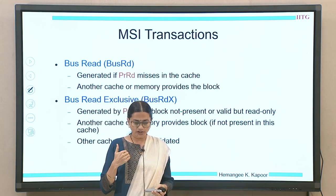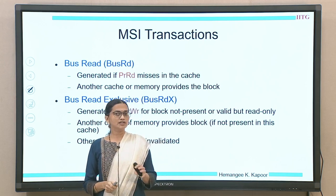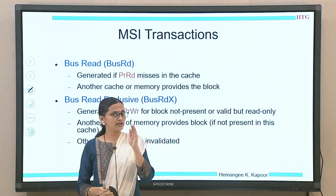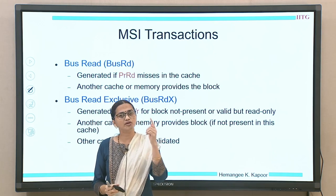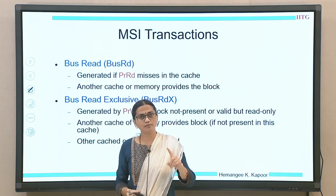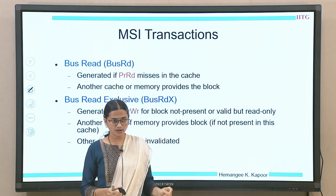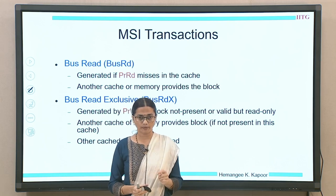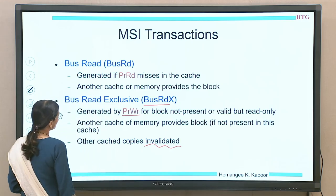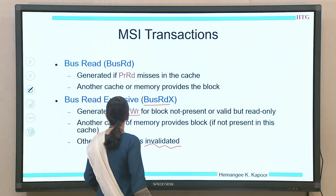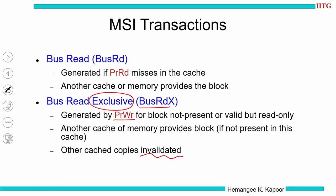Bus read X: when a processor write happens and the block is absent, you must bring the block. Even if the block is present in the shared state — you brought it only for reading but now wish to write — you must inform others to invalidate their copies. So whenever there is a processor write without modification rights, we send a bus read X. This gives the cache exclusive permission to write and to keep modifying the block without informing others, as long as it holds that permission.